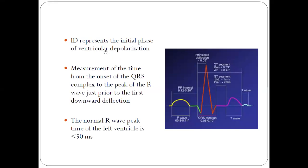Intrinsicoid deflection represents the initial phase of ventricular depolarization. As you know, the QRS is responsible for ventricular depolarization in ECG. The initial phase of ventricular depolarization is from the starting of the Q wave to the peak of R wave. This part is called intrinsicoid deflection and denotes the early ventricular depolarization phase.